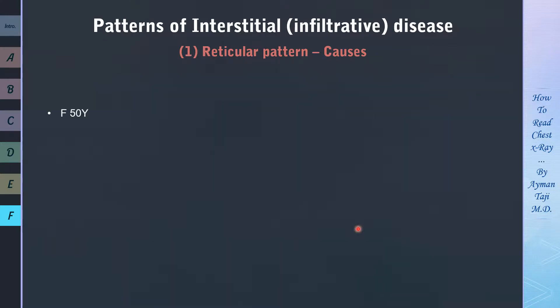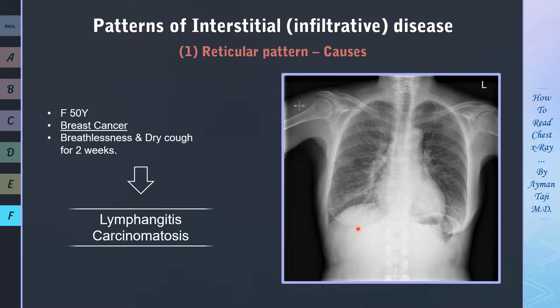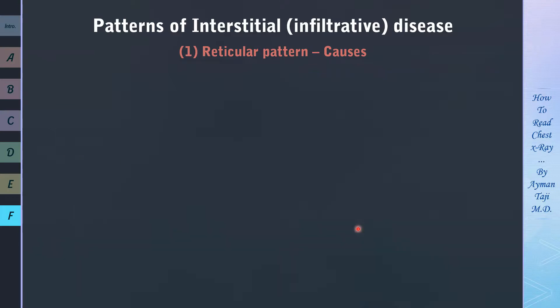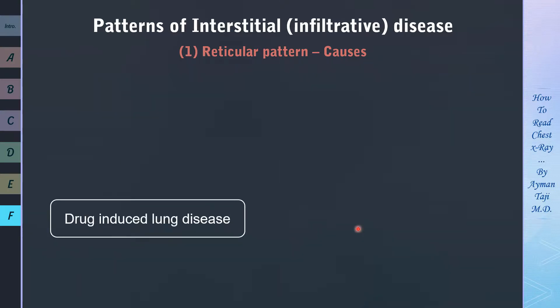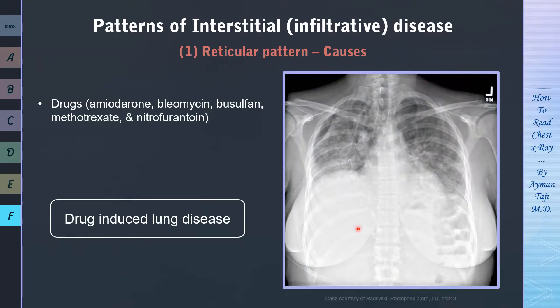If a patient with previously diagnosed malignancy — like a breast cancer patient — presents with breathlessness and dry cough, and her CXR shows interstitial opacities, a rare but important diagnosis to consider is lymphangitis carcinomatosis, referring to spreading of the tumor through the lymphatics of the lungs. Another cause of interstitial opacities is drugs, especially chemotherapeutic agents like amiodarone, bleomycin, busulfan, methotrexate, and nitrofurantoin. For example, a patient taking bleomycin can show extensive bilateral interstitial opacities.